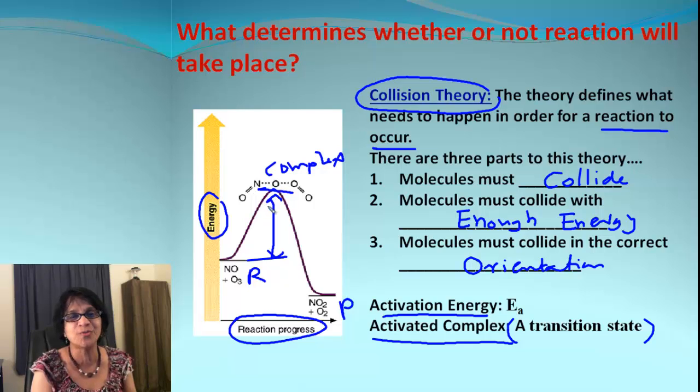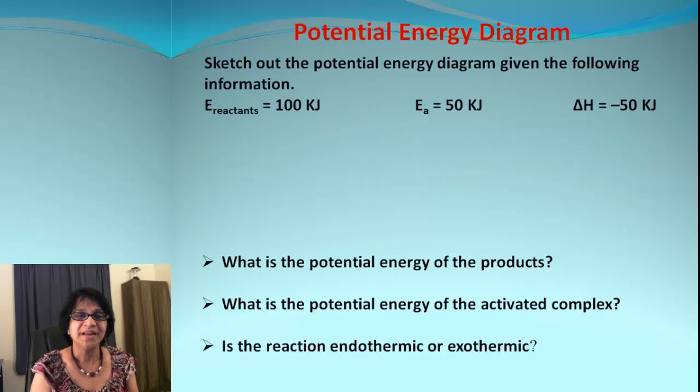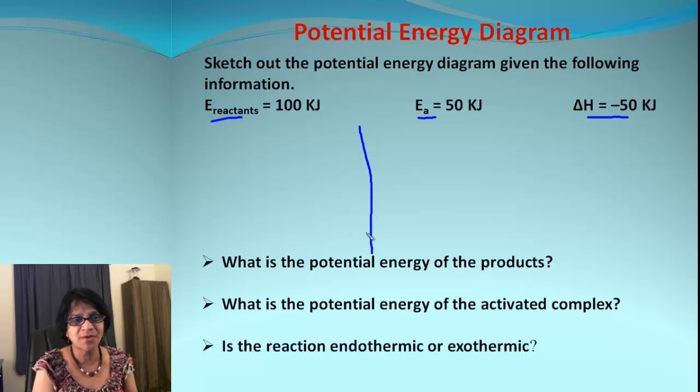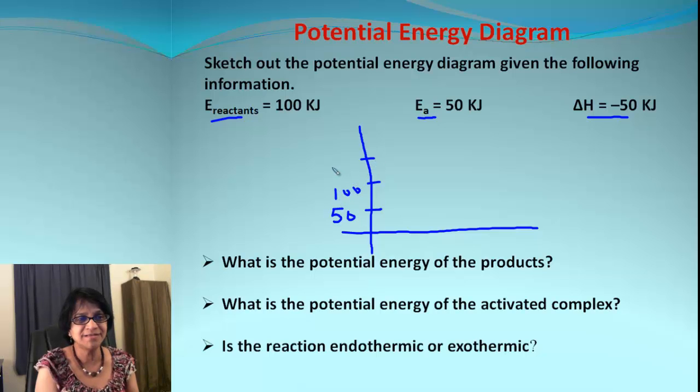Let's draw an energy diagram. Here is energy for reactants given, energy for activation given, and delta H is given. So if I want to have a quick diagram for that, let's take some scale. If it says 50, 100, 150, and 200, your reactants are beginning at 100.